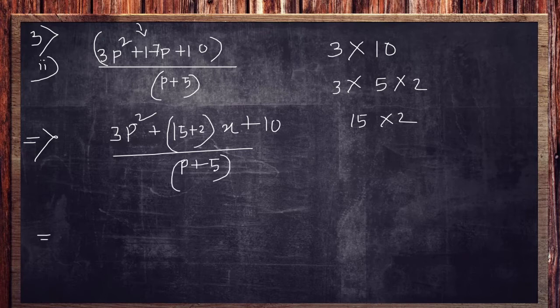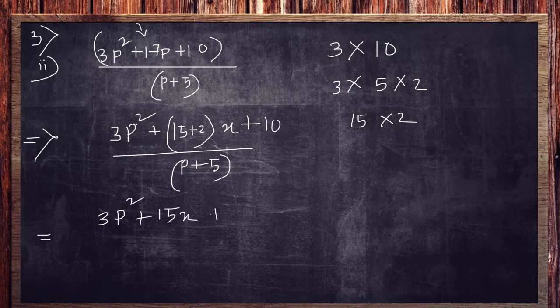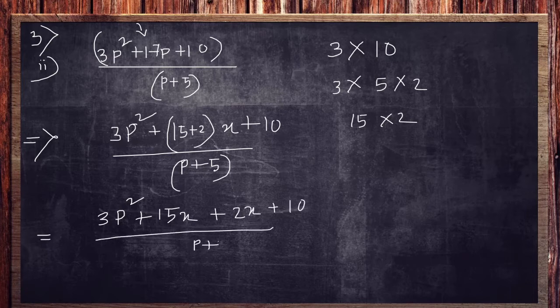So finally you are getting over here that is 3p square. I am just doing the factorization in the numerator. So it is 3p square, 15p plus 2p plus 10 divided by p plus 5. So you got the idea over here. Right now after grouping you need to factorize.